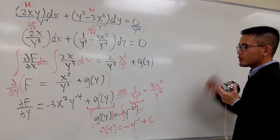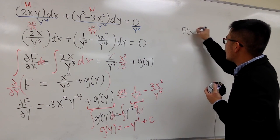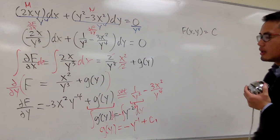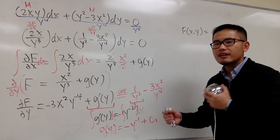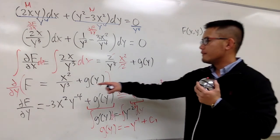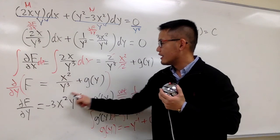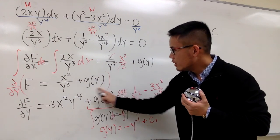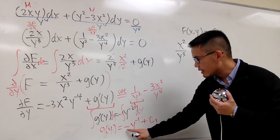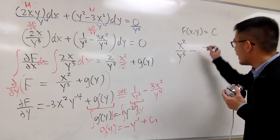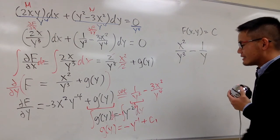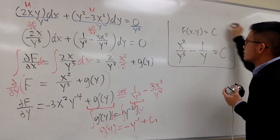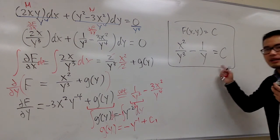Now let's write the final answer. F(x, y) equals a constant. The function part on the left, the constant on the right. Our function is x squared over y to the 3rd, and g of y is negative y to the negative 1, which is minus 1 over y. So the answer is: x squared over y to the 3rd minus 1 over y equals C, and we are done.